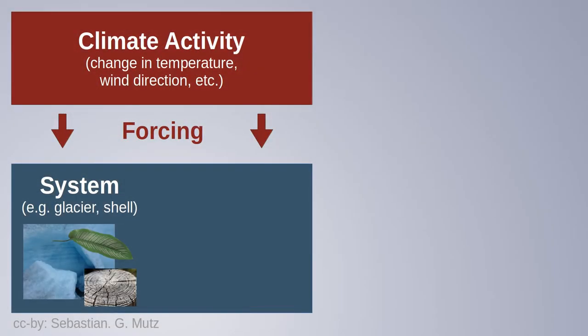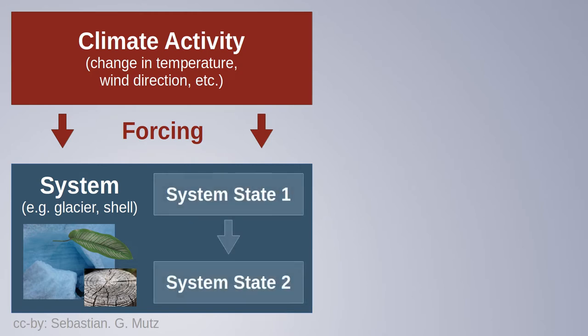And this is how it works. Think about some sort of system that reacts sensitively to changes in climate. This change in climate then potentially induces a change in our system state. Now we can describe our system state by state variables. Now if we're lucky enough, the values for these state variables get recorded before the system state change and after the system state change. If that is the case, then we can use these records to infer something about climate activity.